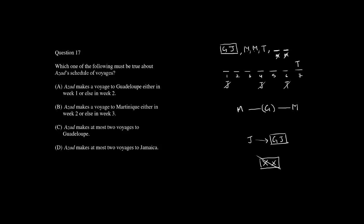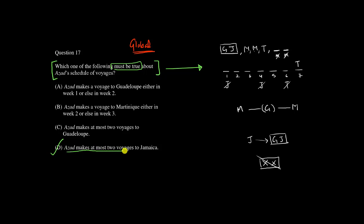Question 17 is a global question — it is based on the original piece of information with no additional information. Which of the following must be true? This will be based on the inferences we made at the start. The answer is D: Azad makes at most two voyages to Jamaica. We inferred this at the beginning — if there is a second J there must be another GJ block, and with the seven slots filled, a third J is impossible.